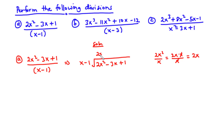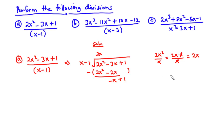So 2x squared divided by x is 2x. We write 2x. Now 2x times x is 2x squared, and 2x times negative 1 is negative 2x. Now 2x squared minus 2x squared is 0. Then negative 3x minus negative 2x is the same as negative 3x plus 2x, which is negative x. We drop plus 1 down. Next, we divide negative x by x — negative x divided by x equals negative 1. So we write negative 1.